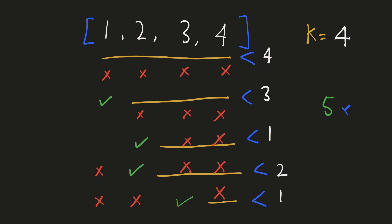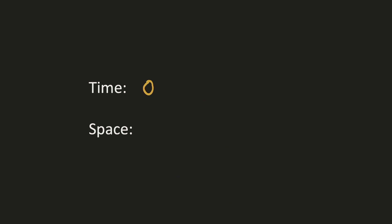This problem can be solved either recursively or with dynamic programming, considering two scenarios: a number is included or skipped. The time complexity is O(n × k) because for each number we consider k possible scenarios depending on the previous sum. The space complexity is also O(n × k) because we store all these values to avoid recomputation.